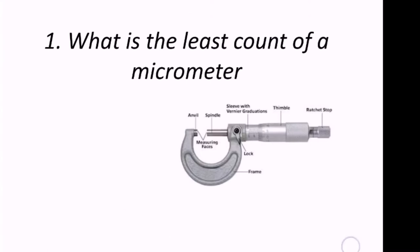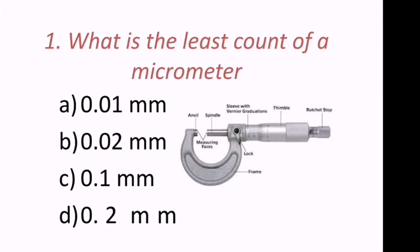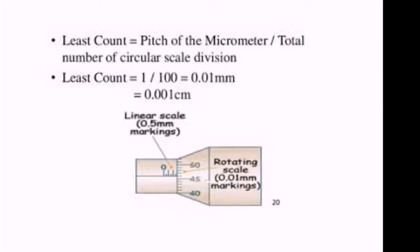First question: What is the least count of a micrometer? We can see the micrometer in the figure. The options are 0.01 mm, 0.02 mm, 0.1 mm, or 0.2 mm. The least count of a micrometer is calculated as pitch divided by total number of circular scale divisions, which equals 1/100 = 0.01 mm, or 0.001 cm. Hence the answer is A: 0.01 mm.